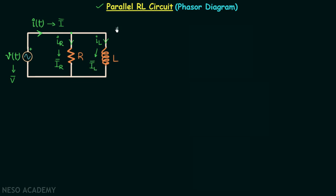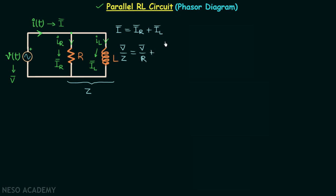So we have I phasor equal to IR phasor plus IL phasor. This resistor and inductor together will offer some impedance to the current flow. When we divide the voltage phasor by this impedance we will have the current phasor. Therefore, I phasor equals V phasor divided by the impedance, IR phasor equals V phasor divided by R, and IL phasor equals V phasor divided by jXL. Taking V phasor common and cancelling, we get 1 over Z equal to 1 over R plus 1 over jXL.